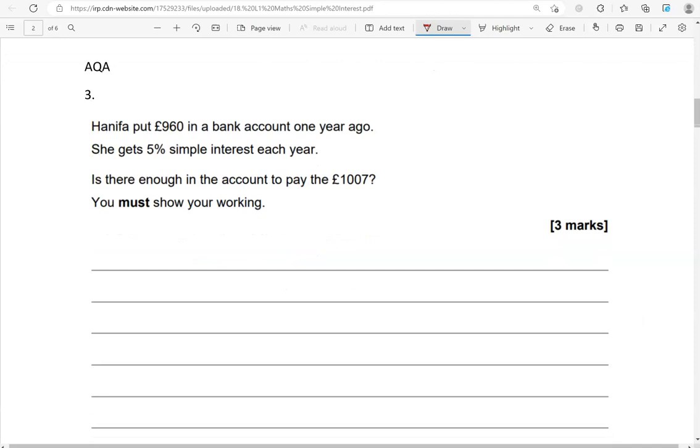Hanifa put 960 pounds in a bank account one year ago. She gets 5% simple interest each year. Is there enough in the account to pay the 1,007 pounds? You must show your working. What matters to us now is that we work out what adding 5% on top of 960 gives us. If it's 1,007 pounds or more, then we can say yes. If not, we're going to say no.